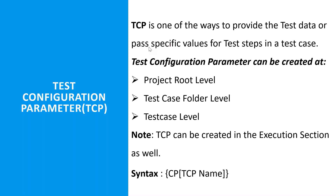The syntax for TCP follows this pattern: a flower bracket, then CP, then a square bracket, followed by the TCP name, and we close both brackets. This is the conceptual understanding of TCP.